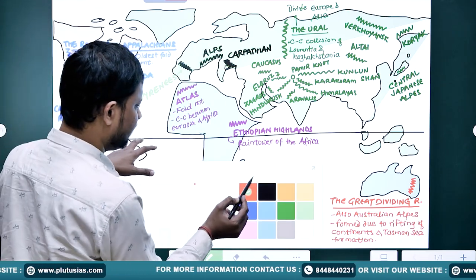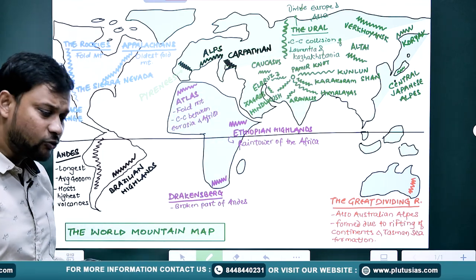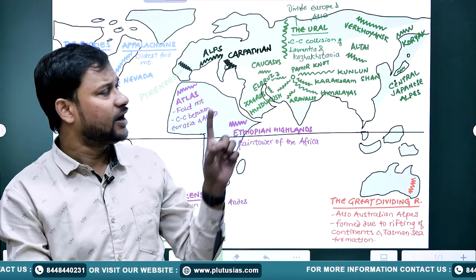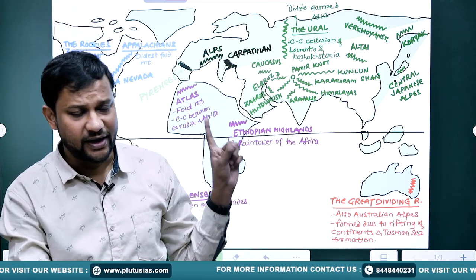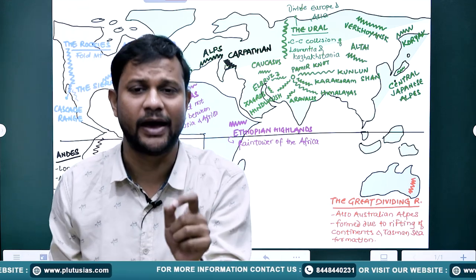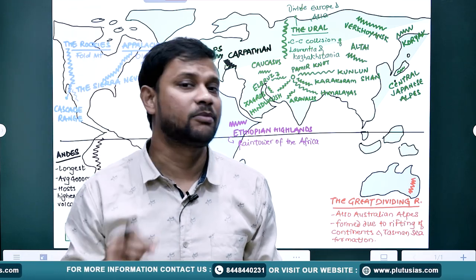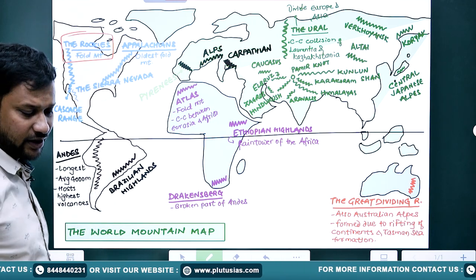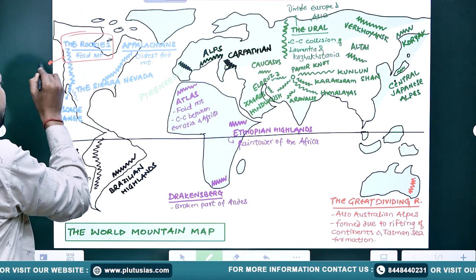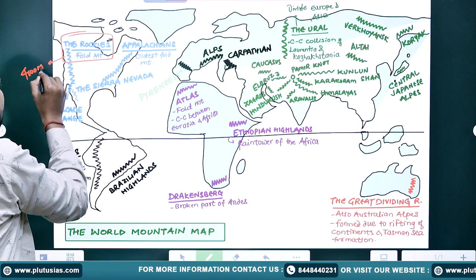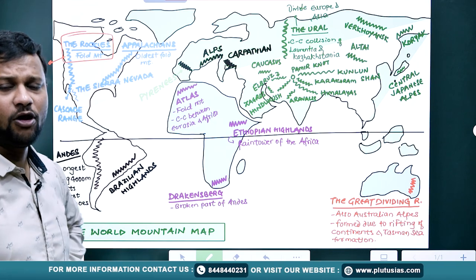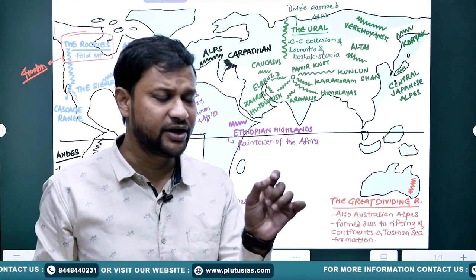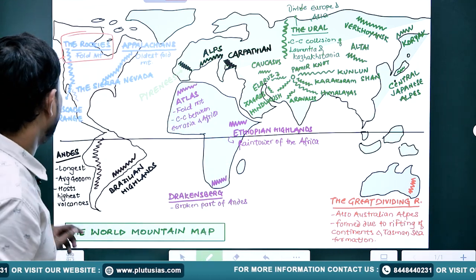Starting from North America, we are going to remember four to five different names. I am trying my best in this series so that you guys have the best connection with it and can remember them as well. Starting with North America, you will find the world-famous Rockies mountain range, stretched almost for 4,000 kilometers — a fold chain mountain, result of continental-continental interaction between North America and the Pacific oceanic plate.